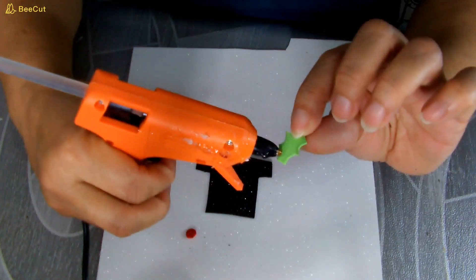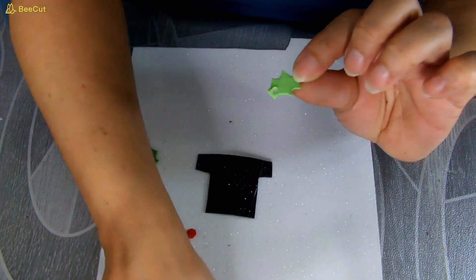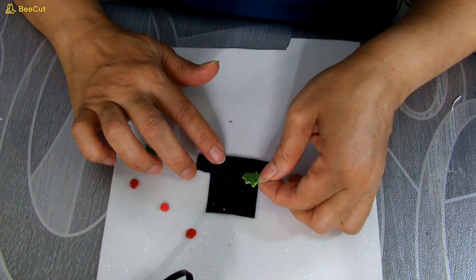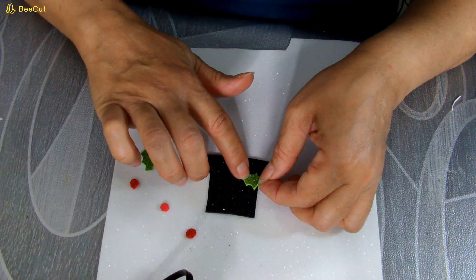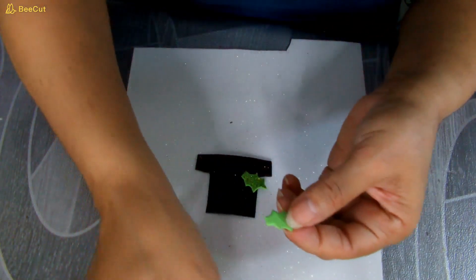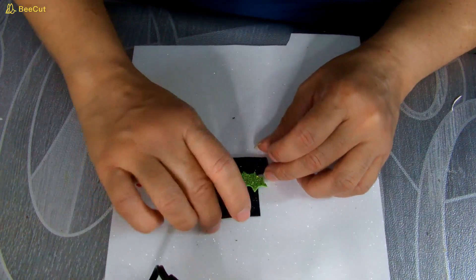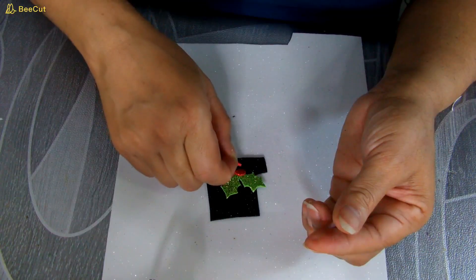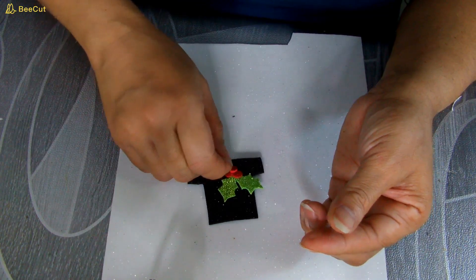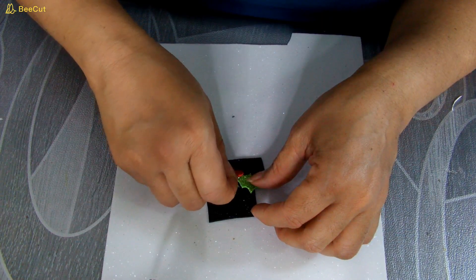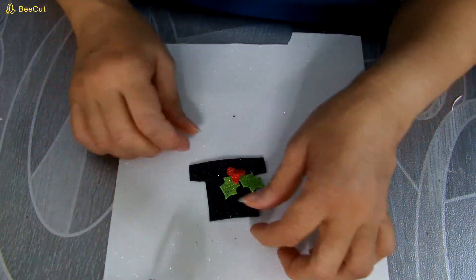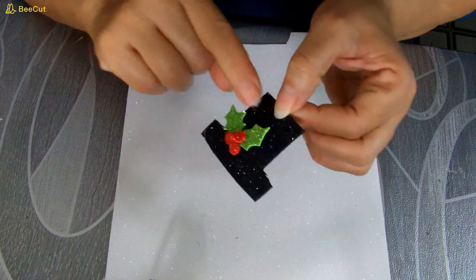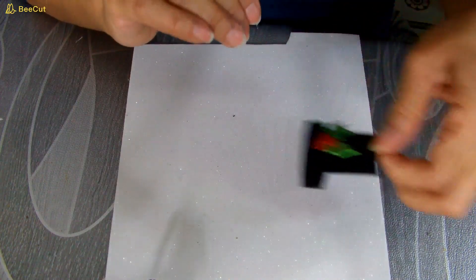Voy a poner en una de las hojitas un poquito de silicón caliente y voy a ponerlo acá. Y en la otra hojita igual voy a poner silicón caliente. Los circulitos lo voy a estar poniendo encima. Así. Y así ya lo voy a dejar. Miren qué bonito se ve. Vamos a dejar nuestro sombrero ya listo por acá.